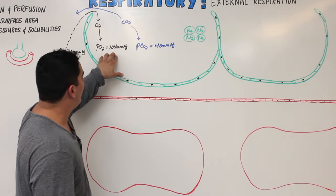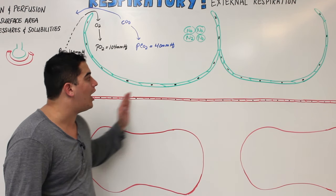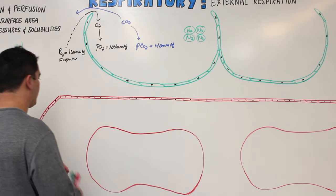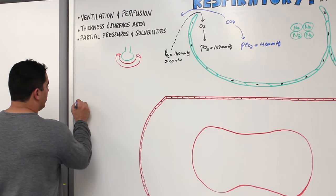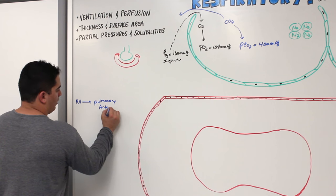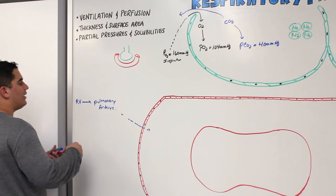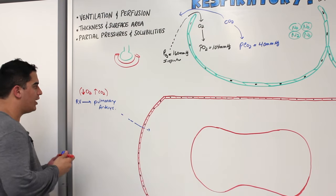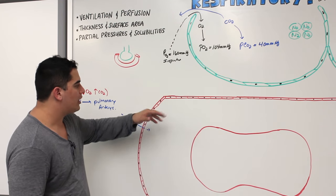Now we understand the partial pressures of O2 and CO2 in the alveoli. The question is: what are the partial pressures in the blood coming through the pulmonary capillaries? This blood is coming from the right ventricle, pumped into the pulmonary arteries, feeding the pulmonary capillaries. The right side of the heart carries deoxygenated blood — low oxygen but high CO2 — so we'd expect low PO2 and a PCO2 slightly higher than in the alveoli.